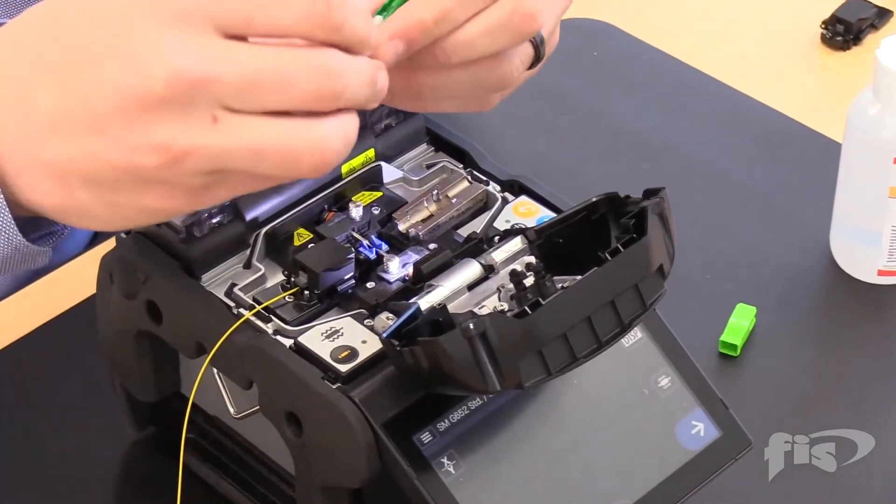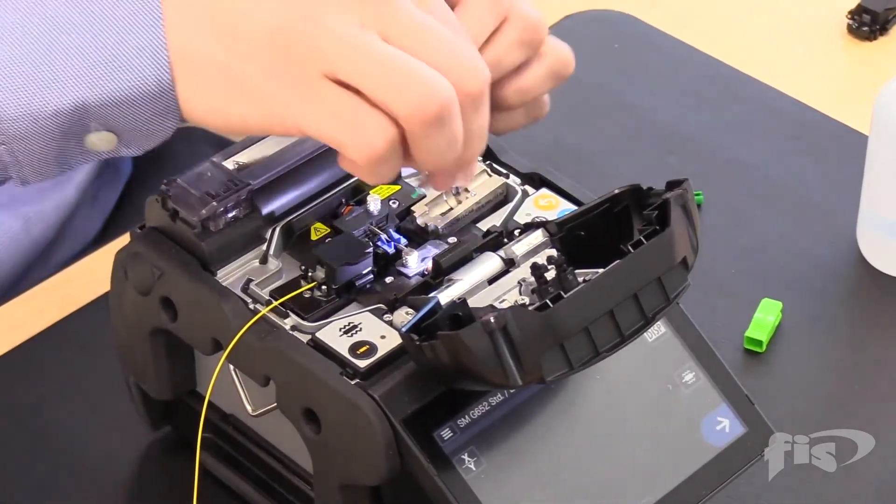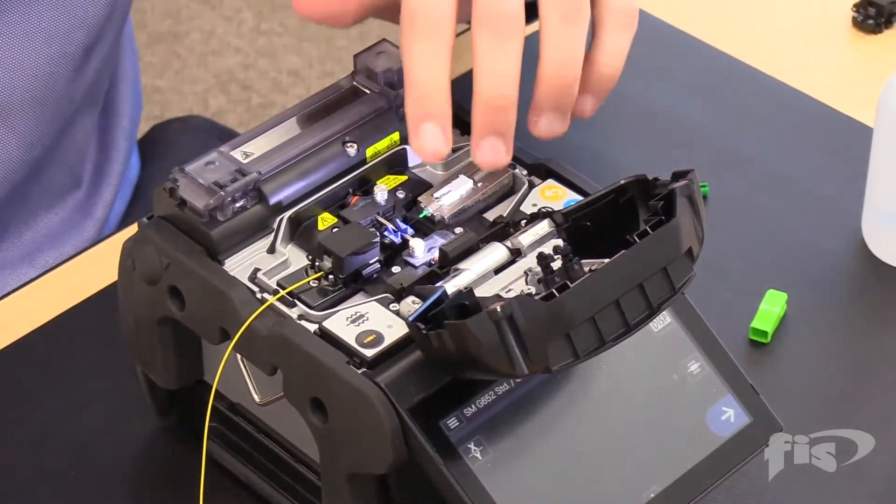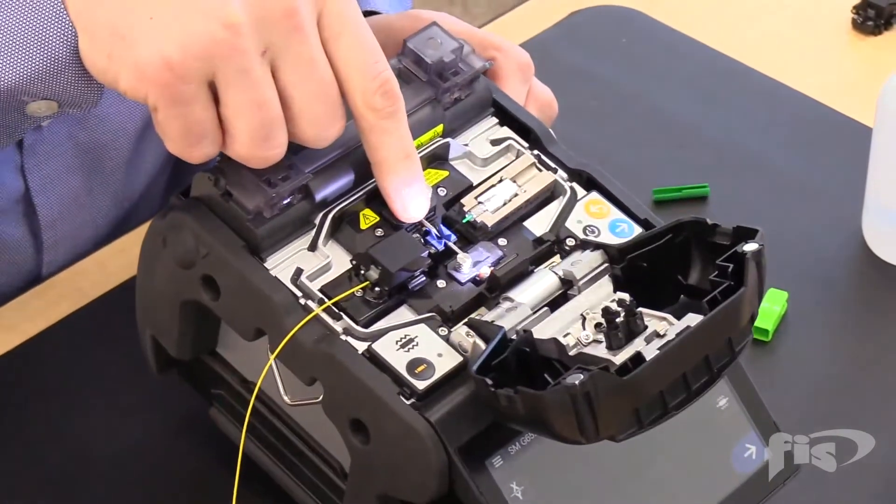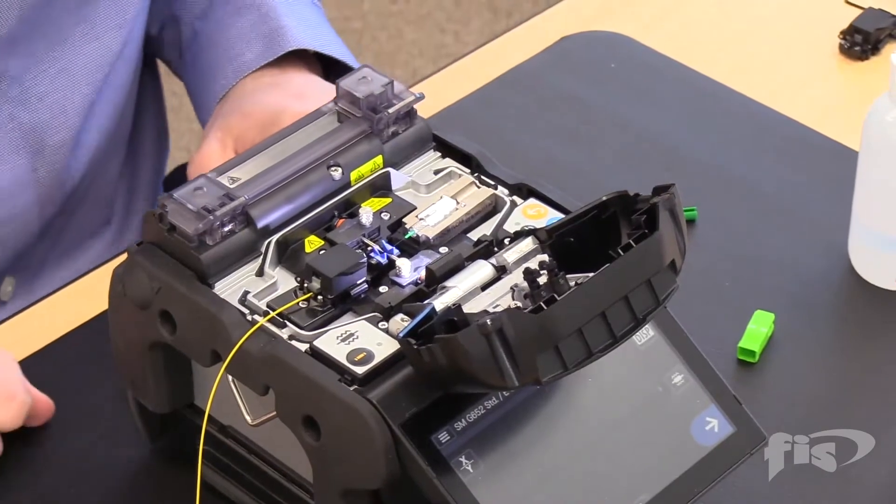Take the splice-on connector, remove the dust cap and the cleave protector, and place it in the splice-on connector holder. Once again, both fibers are past the blue pad of the V-groove, but are not extended far enough to the electrodes.